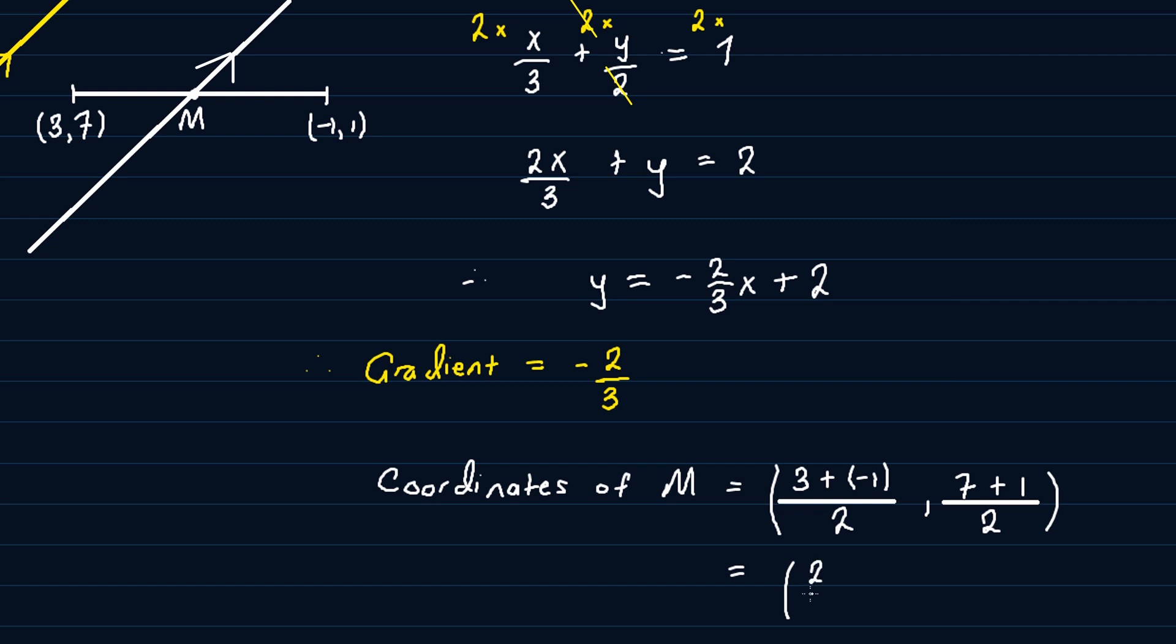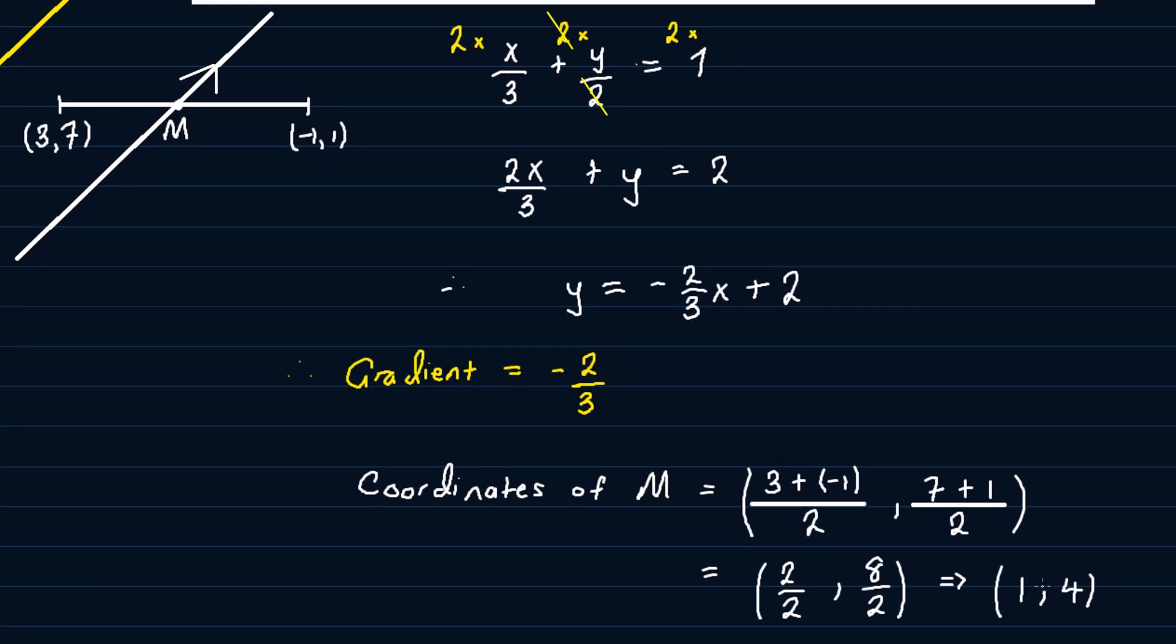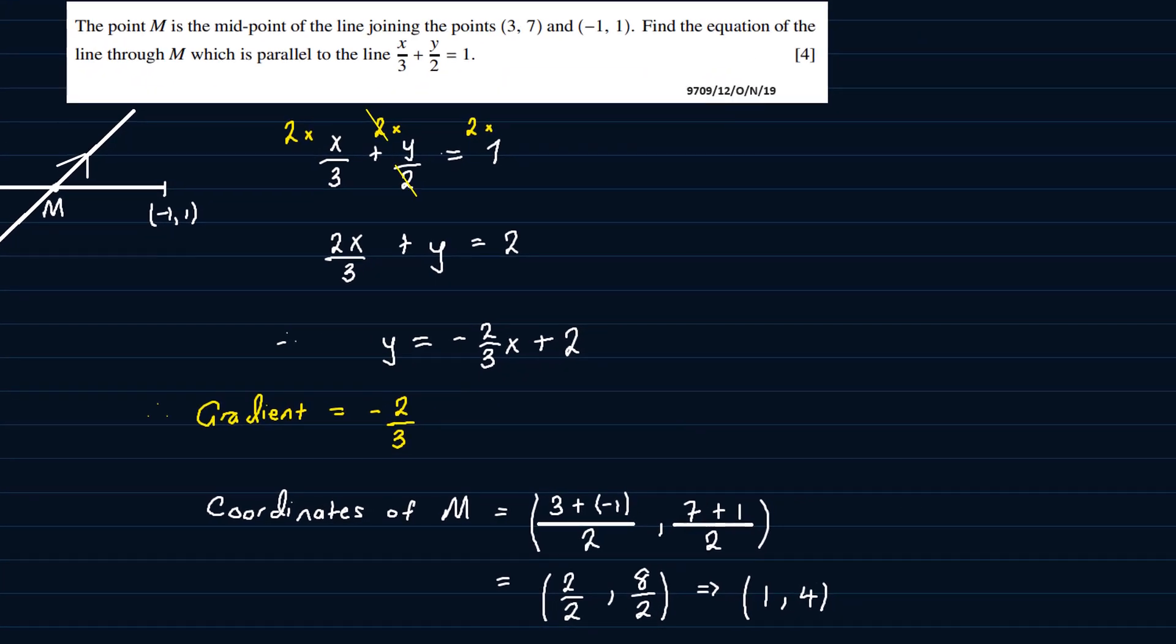So we can simplify this. 3 plus minus 1 is 2, so that's 2/2, and 7 plus 1 is 8, so that's 8/2. This will give us 2/2 is 1, and 8/2 is 4. So the coordinates of M, we have (1, 4).